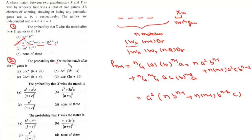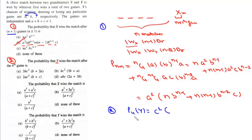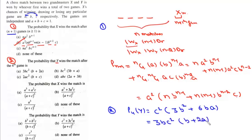For part 2, the probability that Y wins the match after the fourth game: we use the formula derived for X but interchange a and c since Y's winning/losing probabilities are swapped. With n=3, P4 for Y = c² · [3b² + 6b·a]. Taking 3bc common gives 3bc²(b + 2a), which is option A.